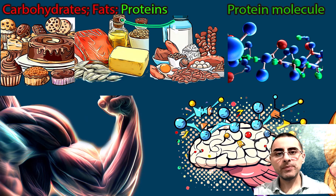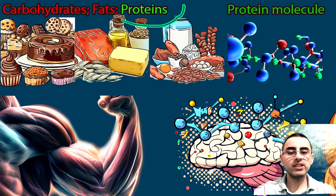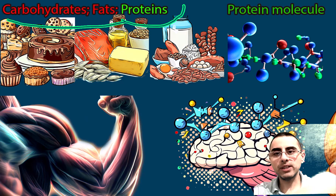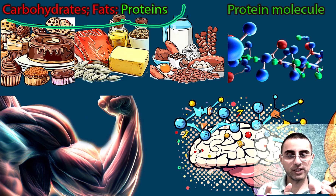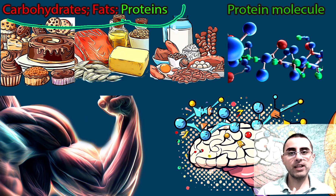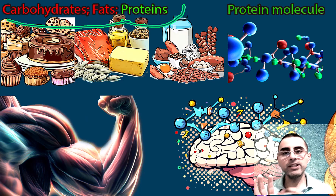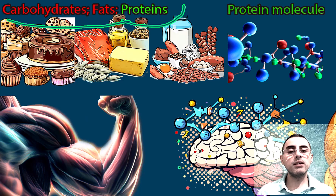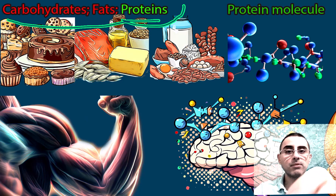We will talk about proteins: what high-quality proteins mean, which proteins are best for our body, and what essential and non-essential amino acids mean. Our diet consists of three components — carbohydrates, fats, and proteins — and they are called macronutrients. We also eat minerals and vitamins, but those are called micronutrients. Today we will focus on proteins.